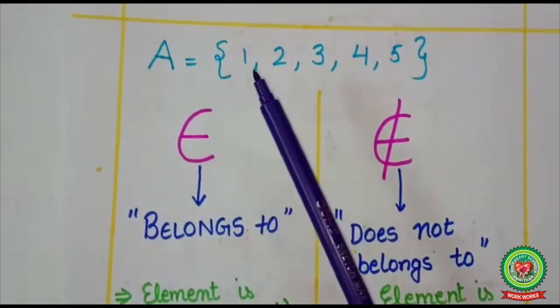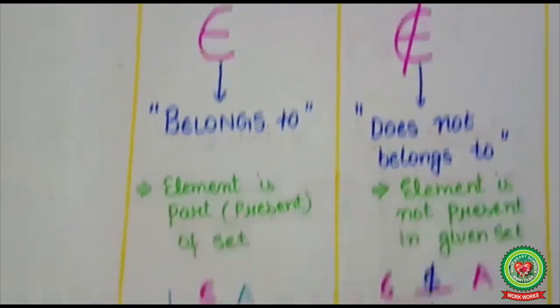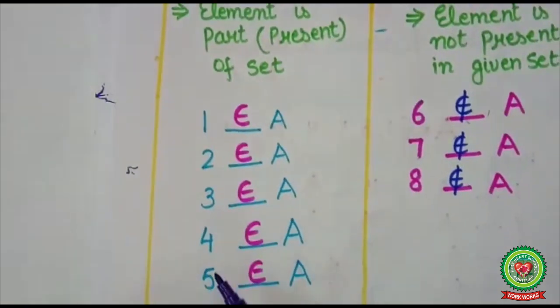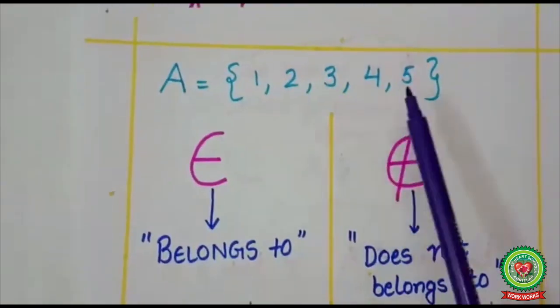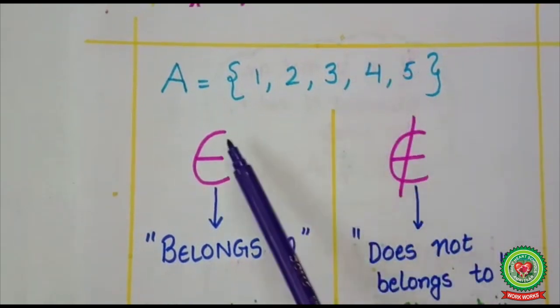Let's understand with an example. Here A is {1, 2, 3, 4, 5}. Now as you can see 1, 2, 3, 4, 5, these are the members of set A. That means these elements are present in set A.